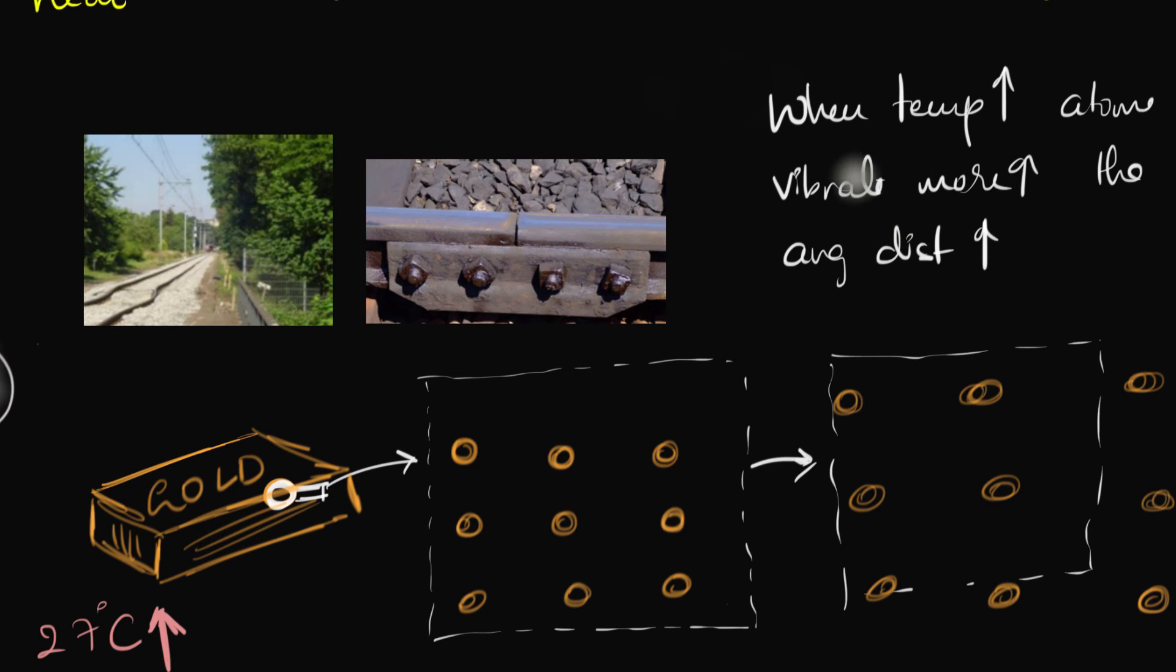And you may be wondering, well, why is it that if the atoms vibrate more, that the average distance must increase? And that would be a good question. But it turns out to be a little bit more complicated. It's really interesting. It turns out to be a little bit more complicated. And so that deserves a separate video all by itself. So maybe we'll look at that in another video. But over here, we're just going to accept the fact that if the atoms vibrate more, then their average distance increases.